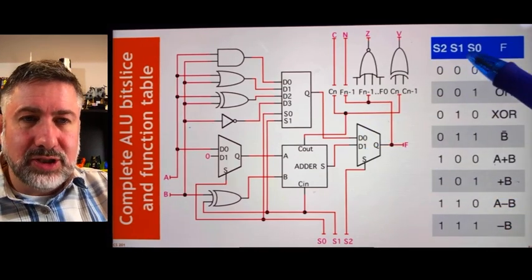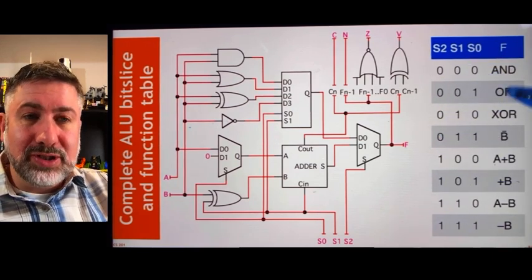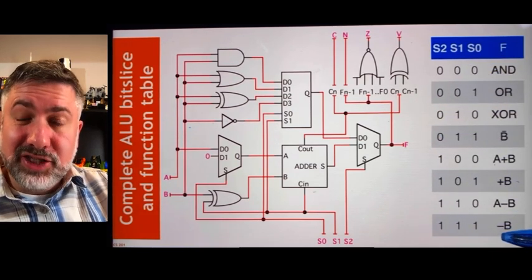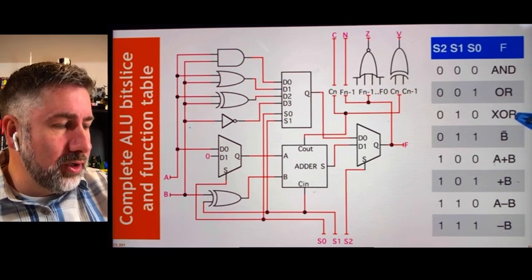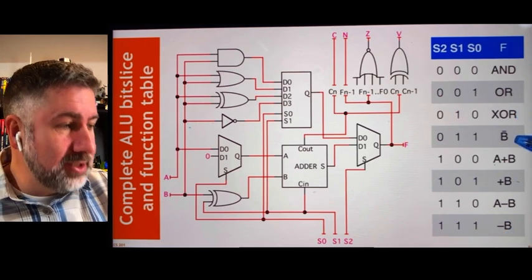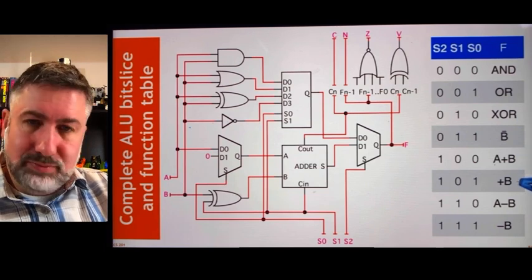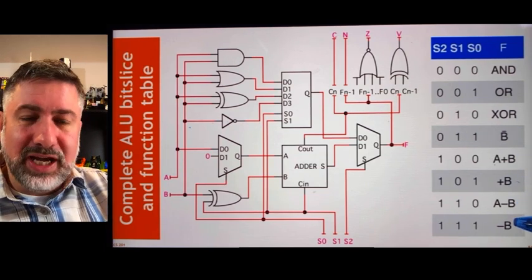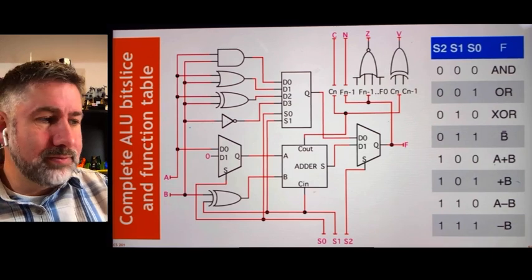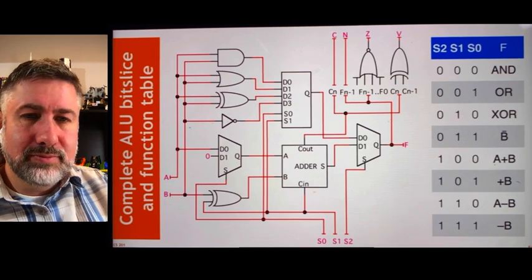Then if you look at these three, S2, S1, S0, based on those numbers, you can see what function this arithmetic logic unit is actually accomplishing. Whether it's doing AND or exclusive OR, NOT, ADD, PASS THROUGH, but just pass the value of B by itself, SUBTRACT, or NEGATIVE B.